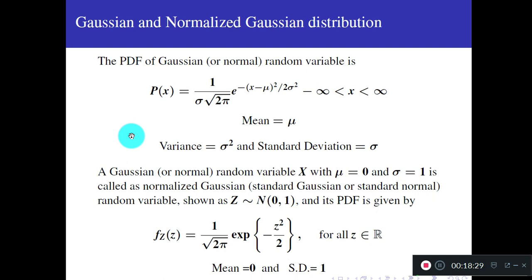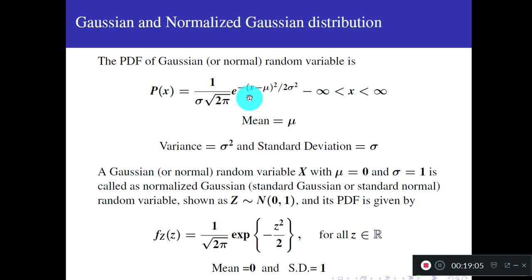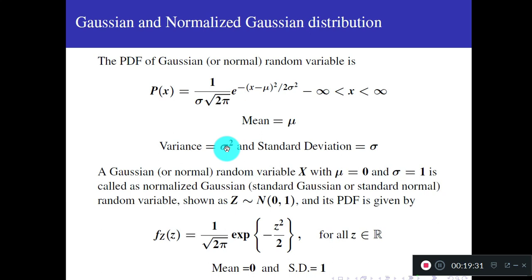The next distribution is Gaussian (normal). Its PDF is f_X(x) = (1/(σ√(2π))) · exp(−(x − μ)²/(2σ²)). The mean is μ and variance is σ². The standard deviation is σ. The parameters μ and σ are included in the distribution itself.